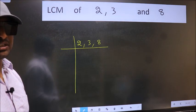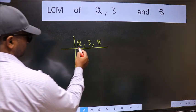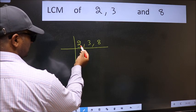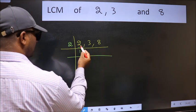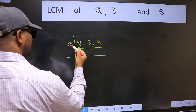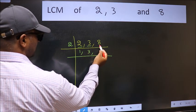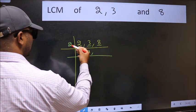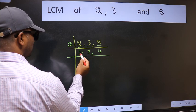Now we should focus on the first number which is 2 here. 2 is a prime number so 2×1 is 2. The other number 3, not divisible by 2 so you write it down as it is. The other number 8, when do we get 8 in 2 table? 2×4 is 8. Now we got 1 here.